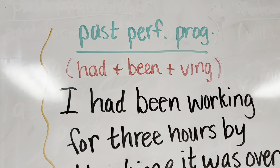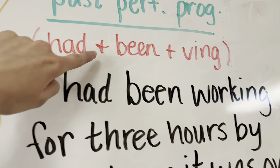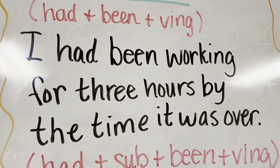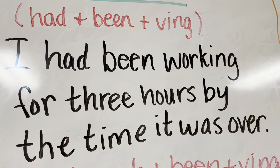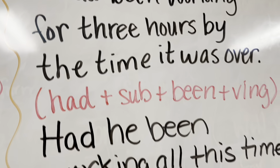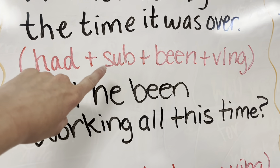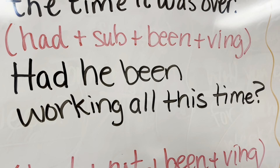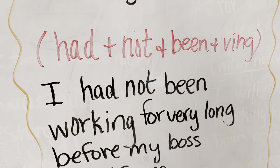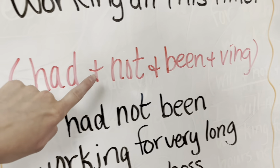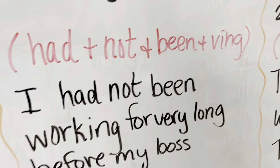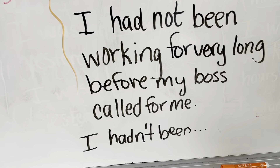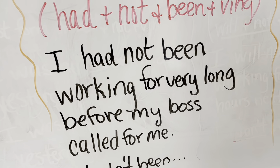Past perfect progressive is formed using had, been, and your verb form. In the form of a question: had, subject, been, and your verb form — had he been working all this time? As a negative: had not, been, verb form — I had not been working for very long before my boss called for me. Or, I hadn't been working for very long.